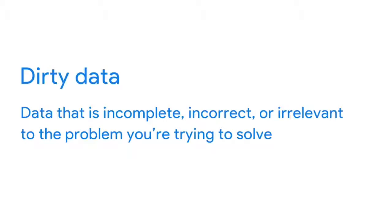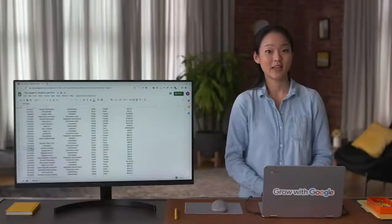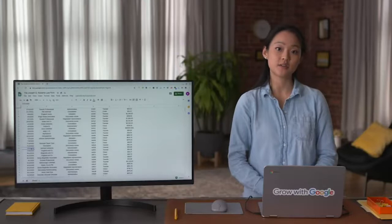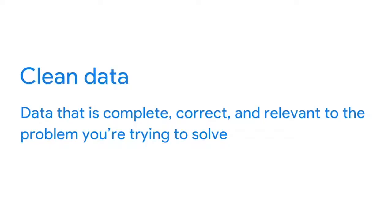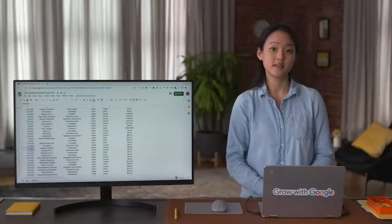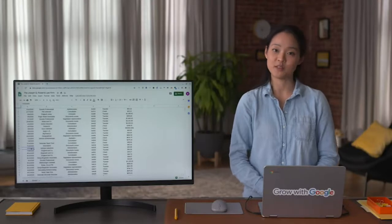Dirty data is data that's incomplete, incorrect, or irrelevant to the problem you're trying to solve. When you work with dirty data, you can't be sure that your results are correct. Data integrity is critical to reliable data analytics results, and clean data helps you achieve data integrity. Clean data is data that's complete, correct, and relevant to the problem you're trying to solve. When you work with clean data, you'll find that your projects go much more smoothly.